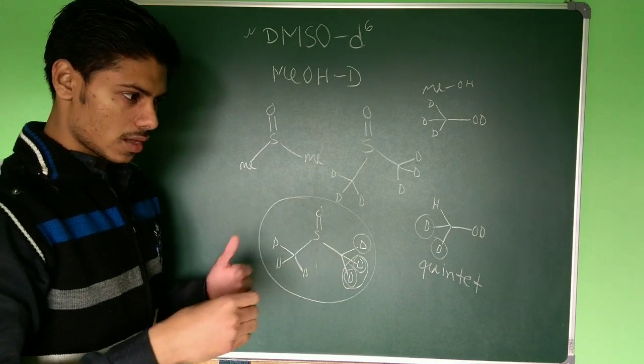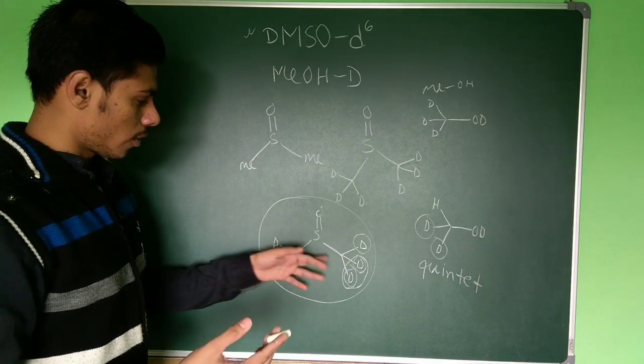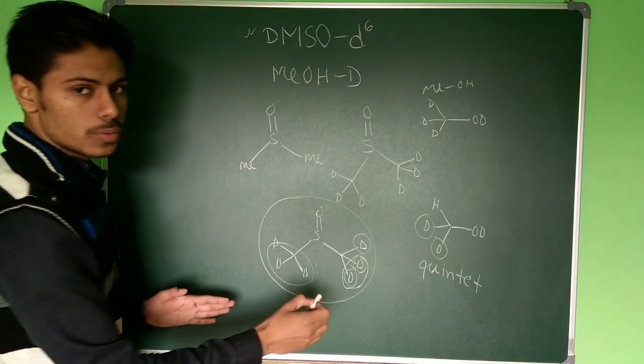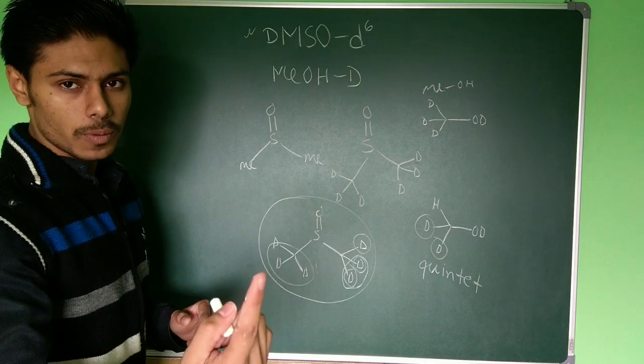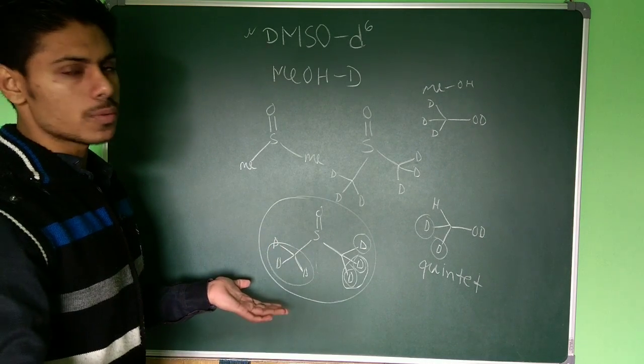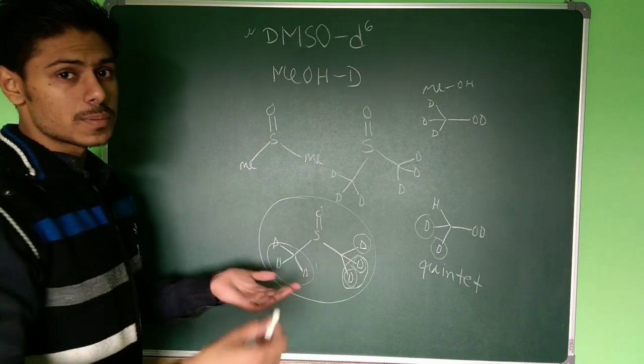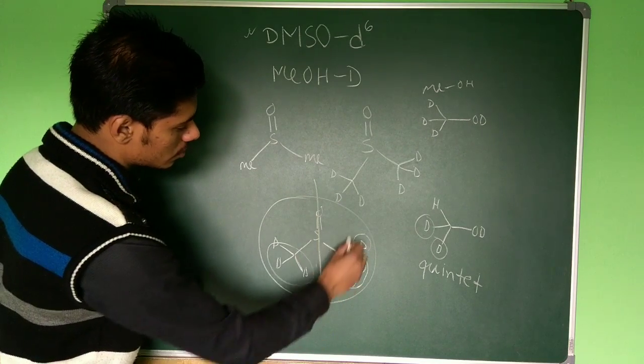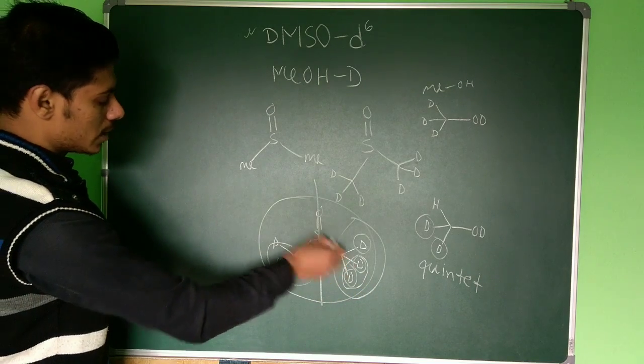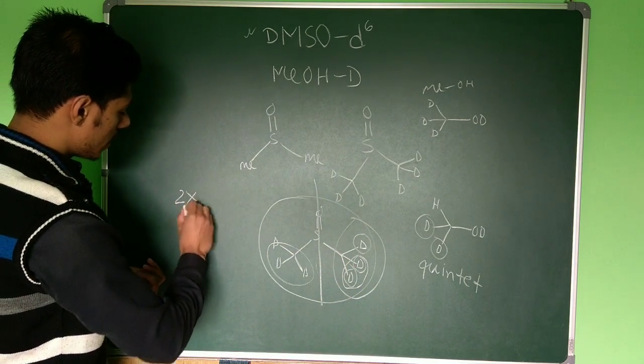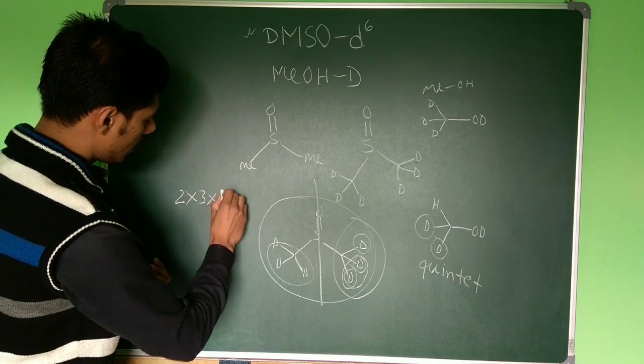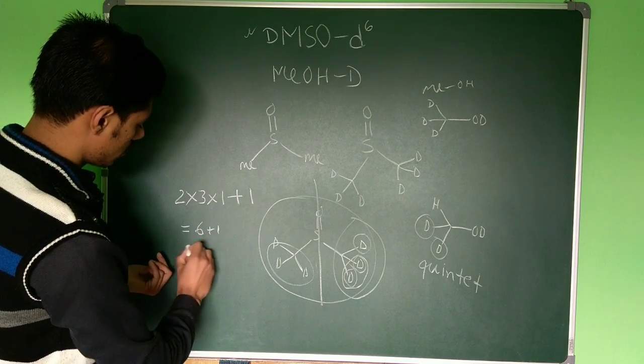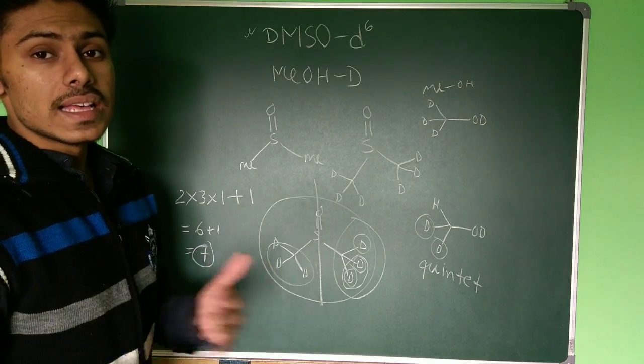Now if you want to calculate the splitting or the splitting pattern for C13, we have to consider all these. You can see these three and these three, they are equivalent, so there are actually only one type of splitting atoms. We have to consider only one part. When we consider the splitting of C13, we will have here N will be 3 because three deuterium are there and its I-value is 1. So 2NI plus 1 will give you 6 plus 1, that is 7. So it will give you a septet.